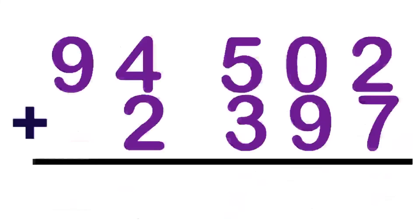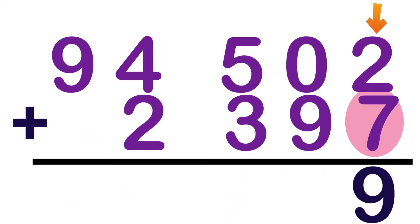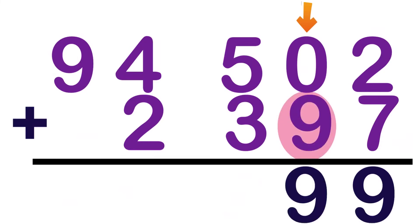Let's have our last example: 94,502 plus 2,397. Let's start at the 1's place. 2 plus 7 — 7 on your mind: 7, 8, 9. So, 2 plus 7 equals 9. Then, 0 plus 9 equals 9, because any number that you add by 0, the sum is the number itself.